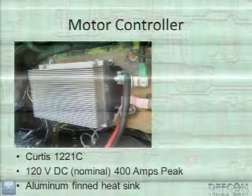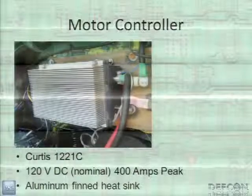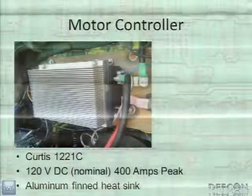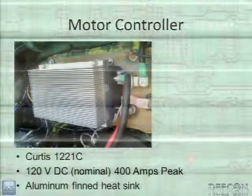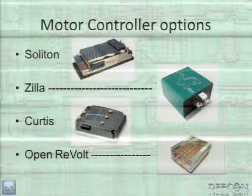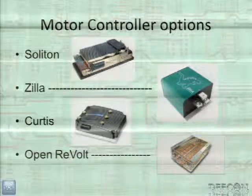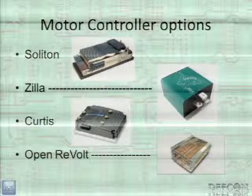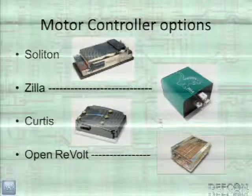The motor controller tells your motor how fast to go — it takes your full pack voltage and converts it into PWM for the motor. I'm running a Curtiss 1221C, and most DC motor controllers need extra cooling, which is why mine has a heat sink; you can add a fan if needed. Popular controller options include the Soliton series — top of the line, including the Shiva Destroyer designed for racing at over a megawatt of power. The Zillas are also high-power. And a very popular option now is the OpenRevolt, which is an open source controller.